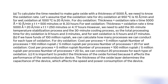If we have funds of 100 million rupiah, we can calculate how many processes we can conduct for each type of oxidation. For dry oxidation: cost per process = 5,000,000 rupiah; number of processes = 100,000,000 ÷ 5,000,000 = 20. For wet oxidation: cost per process = 5,000,000 rupiah; number of processes = 100,000,000 ÷ 5,000,000 = 20. So we can conduct 20 processes for each type of oxidation.